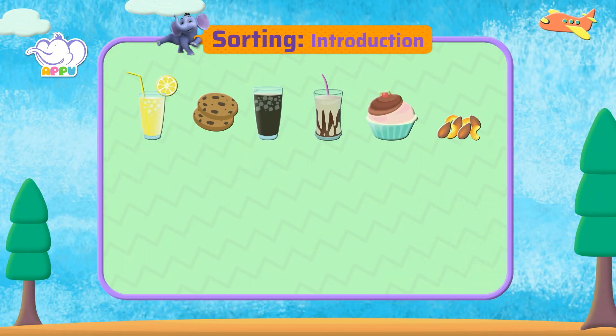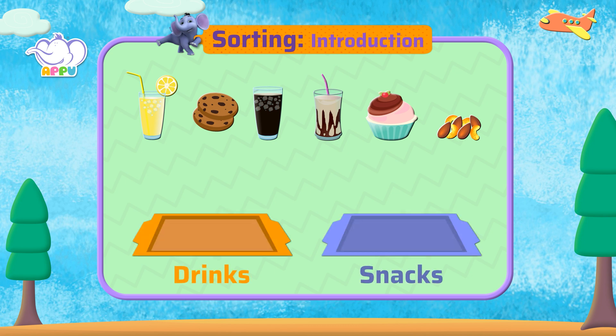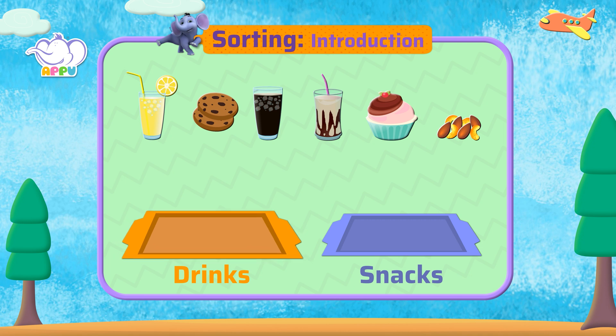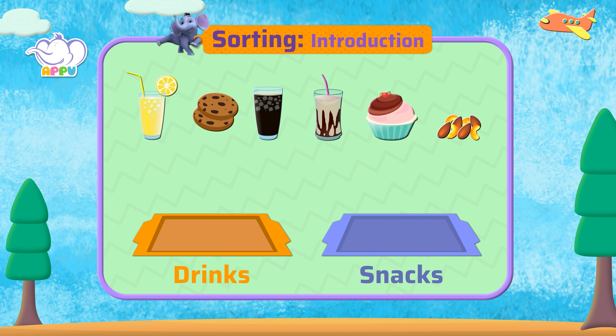Sorting means to put similar objects into groups. Here we see drinks and snacks. Let's put the drinks on the drinks tray and snacks on the snacks tray.